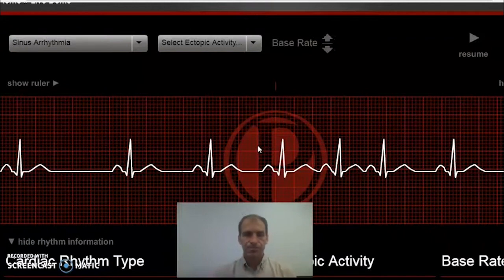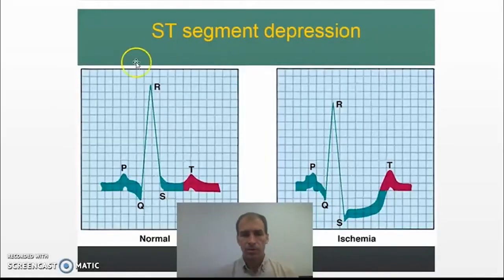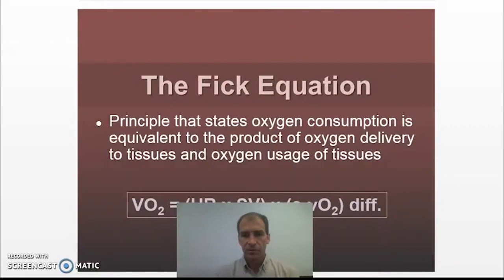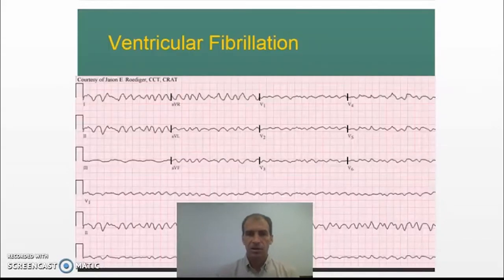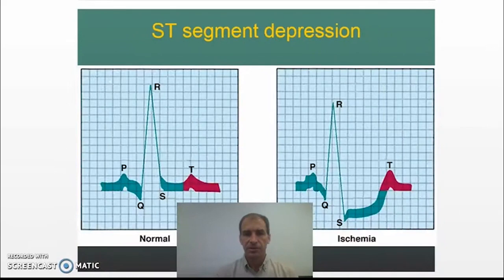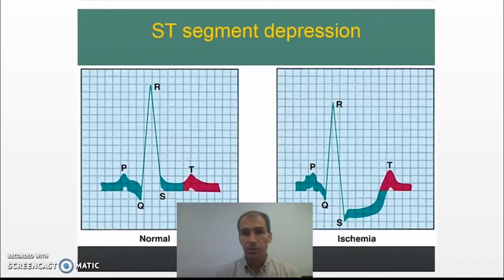Something we can see in an EKG. There are some other examples in your notes as far as other arrhythmias you can look at — ventricular fibrillation, ventricular tachycardia, PACs, PVCs. In the next lecture we're going to review the Fick equation and then finish up this chapter. Thank you.